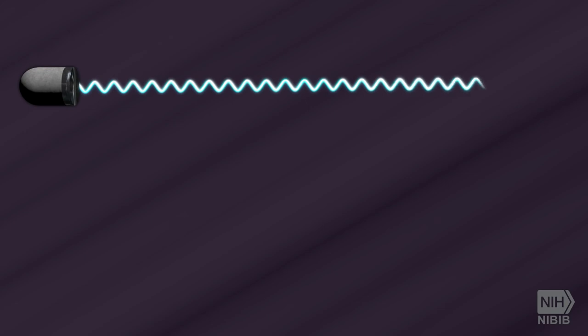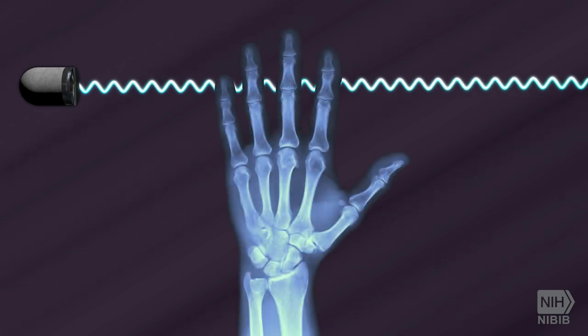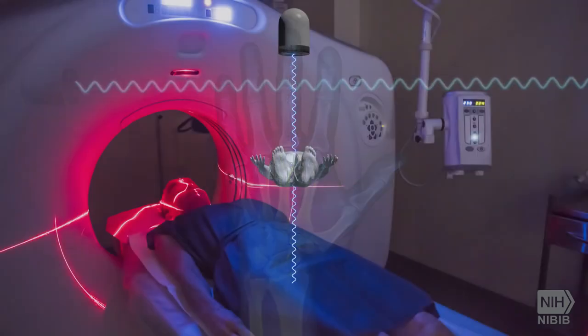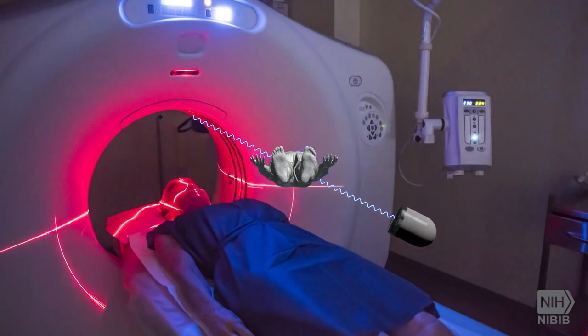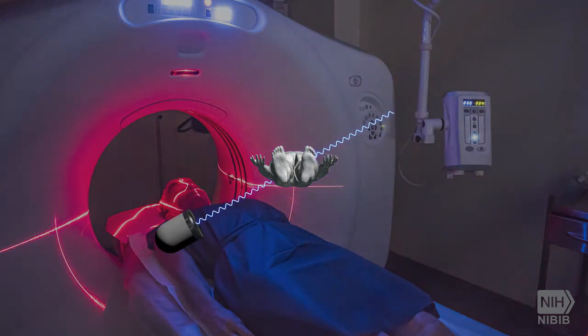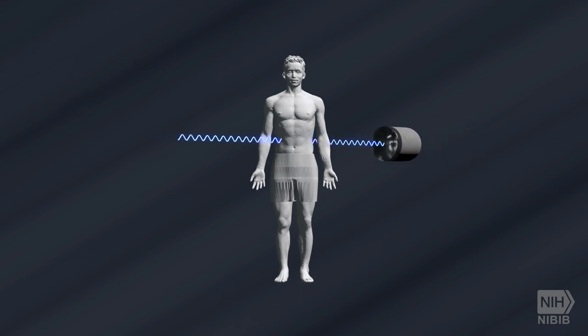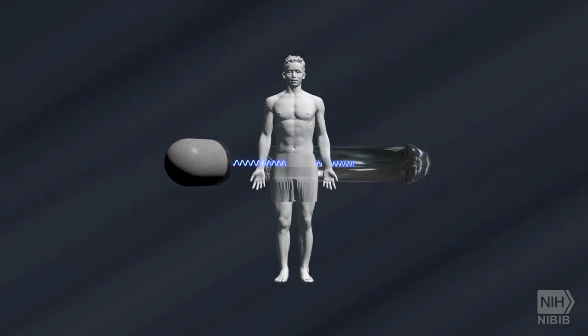A conventional x-ray uses a fixed tube that sends x-rays in only one direction, while a CT scanner uses a motorized x-ray source that shoots narrow beams of x-rays as it rotates around the patient.